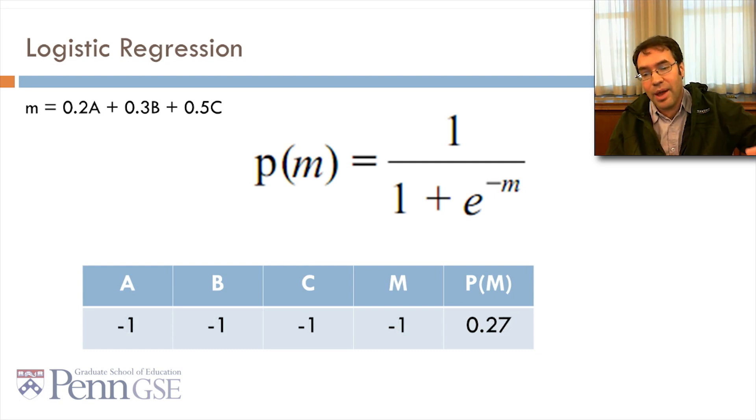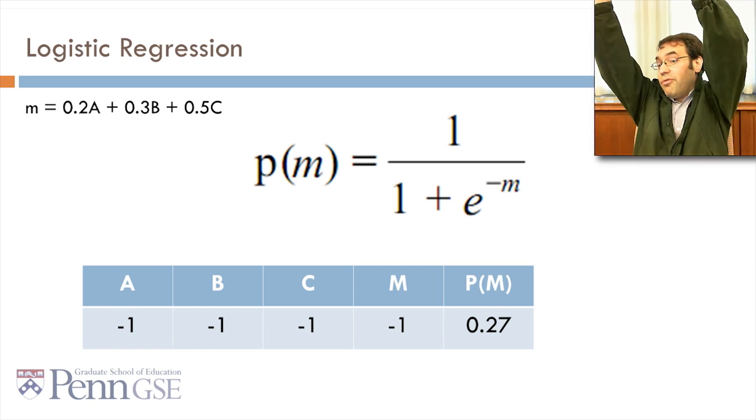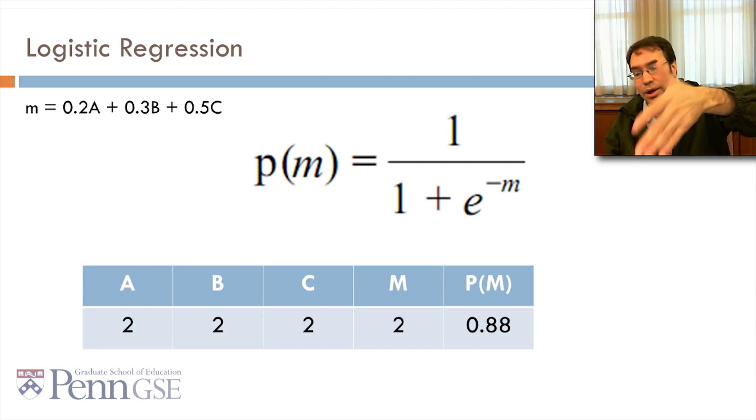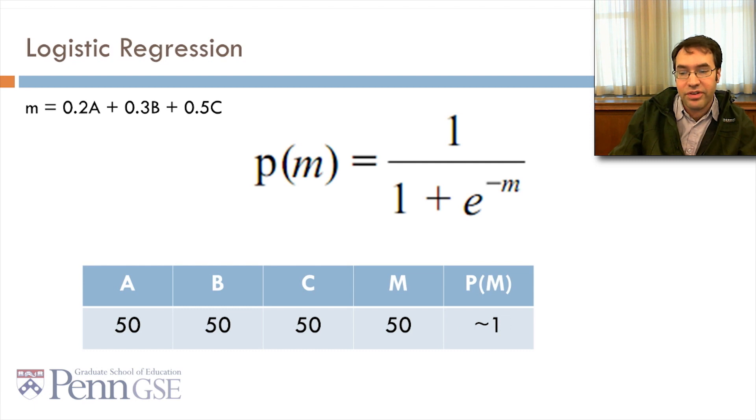If they're all 1, then m will be 1, and p to the m will be 0.73. Again, try it out in Excel. And, if they're all negative 1, m is negative 1. You'll notice that before, when it was 1, it was 0.73, 0.23 above 0.5. Now, it's 0.23 below 0.5. And, so on. For 2, it's 0.88. For 3, it's 0.95. And, if they're all 50, it's just so close to 1 as to be basically 1.